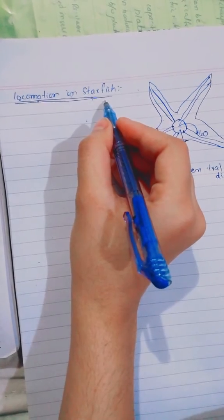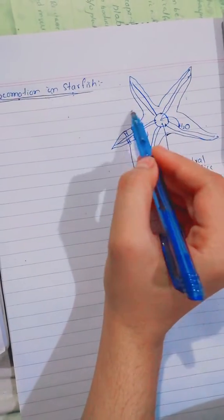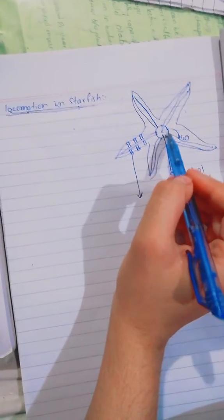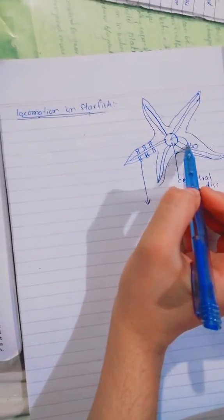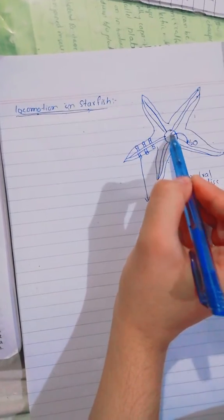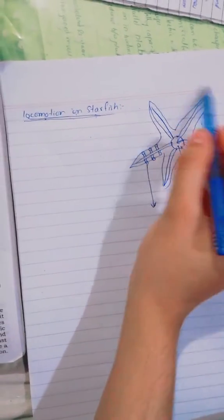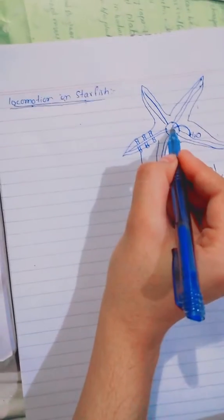Starfish is an echinoderm. It is pentamerous, meaning having five arms. It has a central disc in the center in which water is drawn in because it lives in water. This water goes into the canals which are called radial canals.